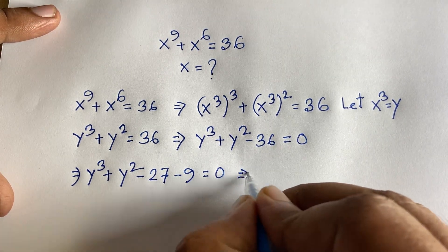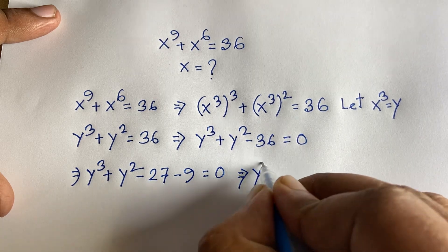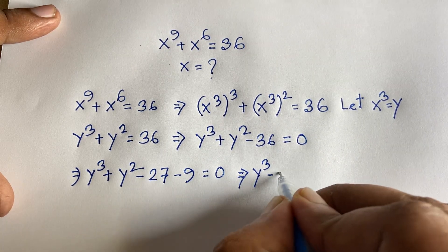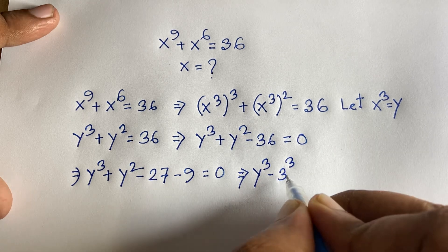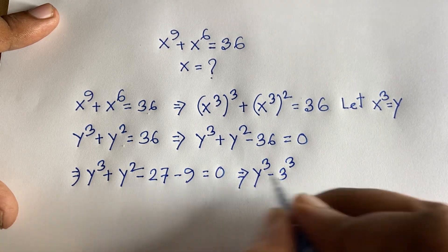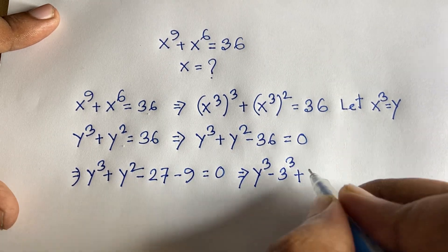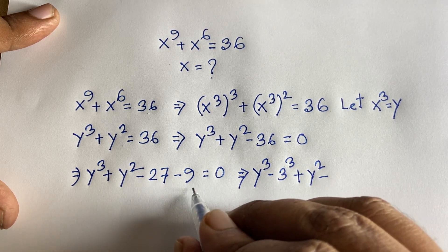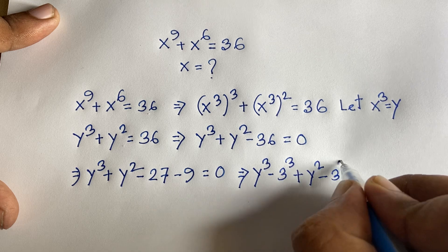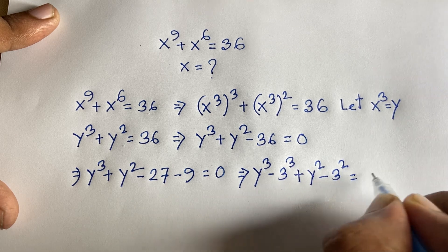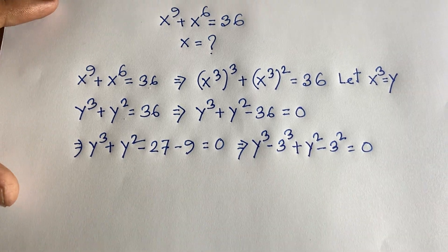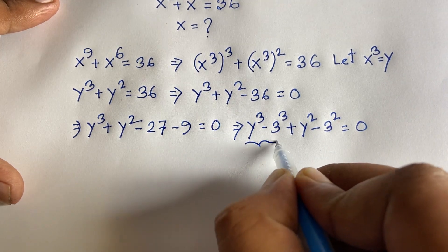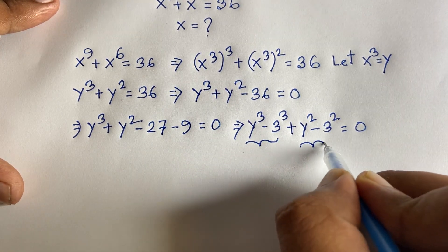The expression becomes y³ − 27 + y² − 9 = 0. We recognize that 27 is 3 to the power 3, and 9 is 3 to the power 2. So this becomes y³ − 3³ + y² − 3² = 0.